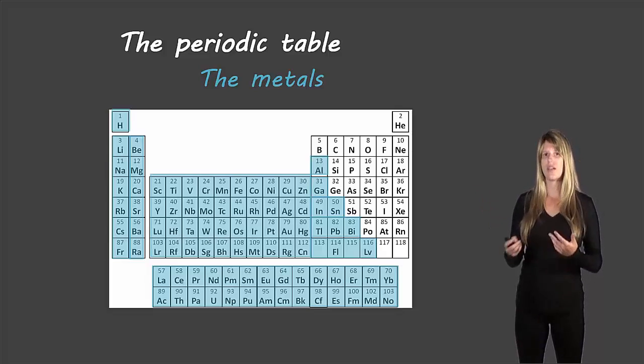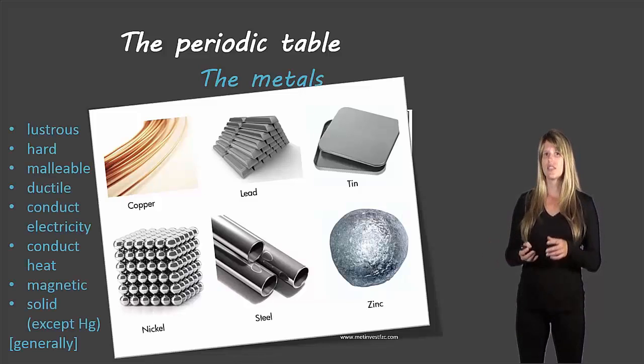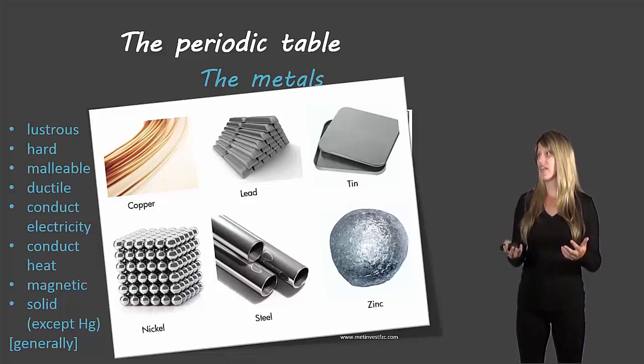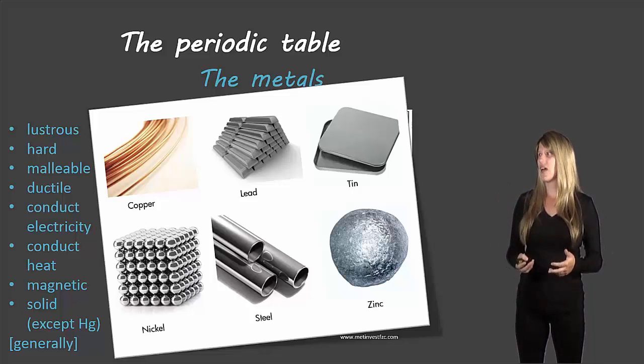Now if we look at the majority of the periodic table, what's colored in blue there, those are all metals. Here are pictures of different types of metals. They all have similar characteristics: they're lustrous, which means shiny, hard, malleable, which means bendy, ductile, which means you can stretch them out. They conduct electricity and heat, they're magnetic, and they're usually solid at room temperature, except for mercury which is actually liquid at room temperature.